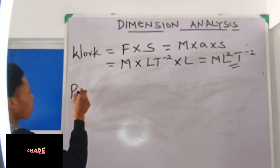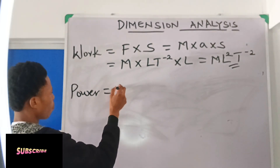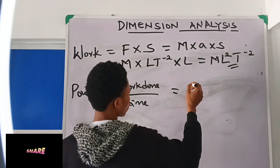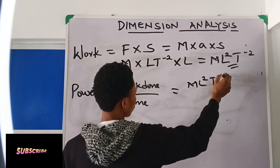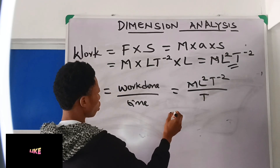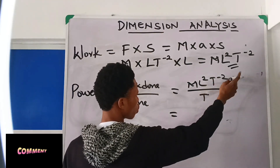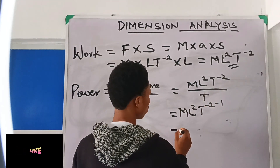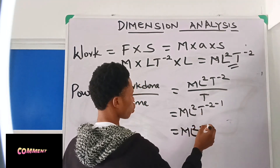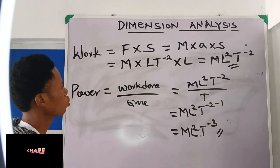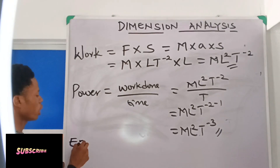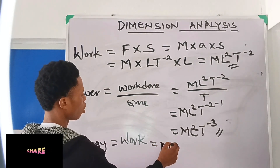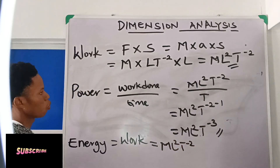If you are asked to find the dimension of power, power is work done over time taken. Work done has dimension ML²T⁻², all over T. Subtracting the powers of T: T⁻²⁻¹ = T⁻³. So the dimension of power is ML²T⁻³. And if you are asked for the dimension of energy, energy is the same as work, so it is ML²T⁻².